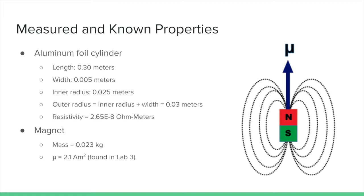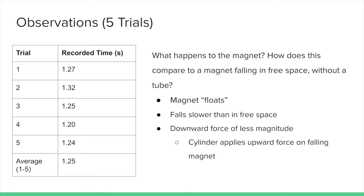The magnet has a mass of 0.023 kilograms and a magnetic dipole moment of 2.1 amp-meters squared. To the left are my recorded observations for every trial, whose average is 1.25 seconds.